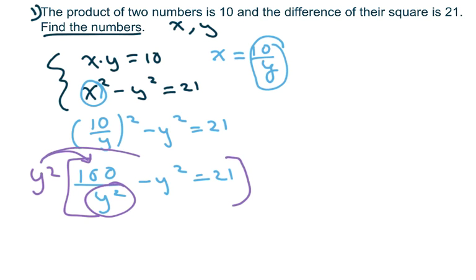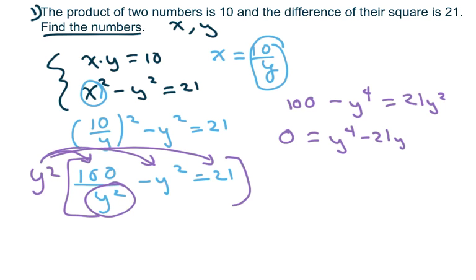And I'm going to multiply each term by y squared. So you get 100 minus y to the fourth equals 21y squared. I'm going to move everything over. So you're going to get, I'm going to move it over to the right. You get y to the fourth minus 21y squared minus 100.